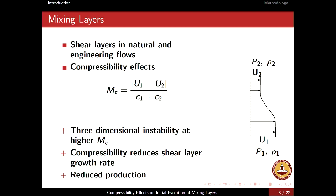Mixing layers are shear layers characterized by the velocity difference. They are prevalent in nature, like when two streams merge together, as well as in engineering flows like inside an aircraft combustion chamber or a jet exhaust. They are characterized by velocities U1 and U2 with a difference. The interface can be continuous or non-continuous, but viscous effects will eventually lead to a continuous interface. When the velocity differences are higher, compressibility effects start to kick in.